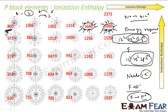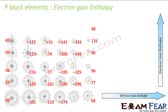As you go down the group, ionization enthalpy also decreases, because the size increases and it becomes easier to pluck an electron. For example, going from carbon downward: carbon has a smaller size and is difficult to pluck an electron from; silicon is a little larger so it's easier; germanium is even larger so it's all the more easy. The trend continues as you go down the group.